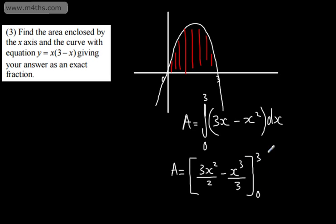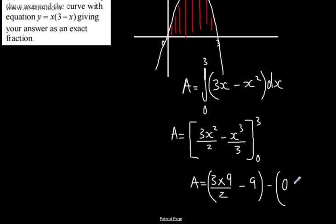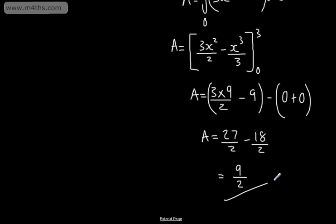We're interested from 0 to 3. So the area is going to be 3 times 3 squared over 2, which is 3 times 9 divided by 2. Minus 3 cubed over 3 — that's 27 divided by 3, which is 9. Then the 0 terms give 0 plus 0. So we have 27 over 2 minus 18 over 2, which gives us 9 over 2, or 4.5 square units.